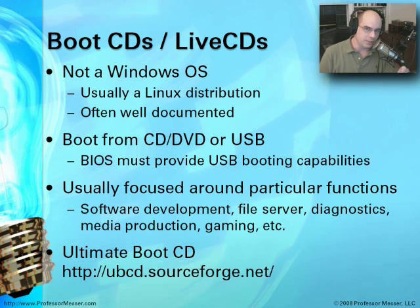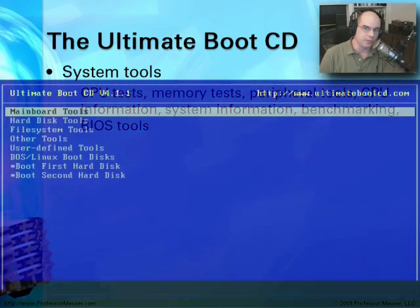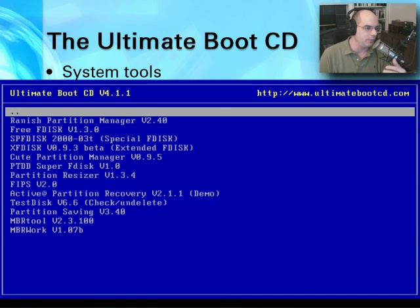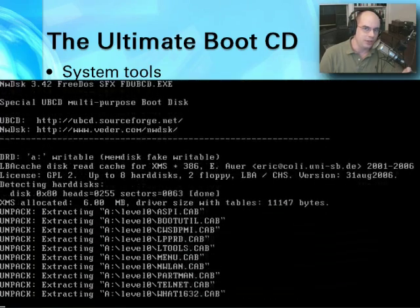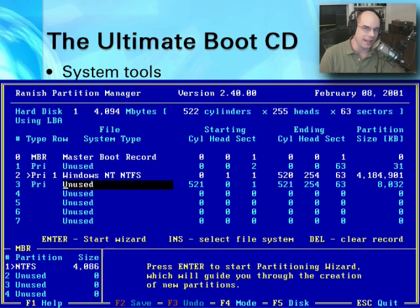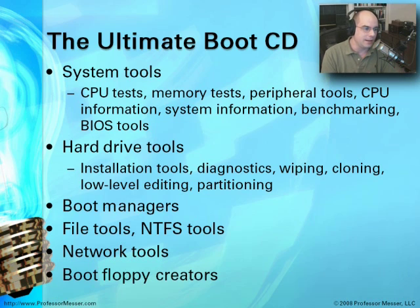A great example is the Ultimate Boot CD, available at ubcd.sourceforge.net. It has an amazing amount of functionality — system tools, diagnostic tests for memory and CPU, benchmarking capabilities, and hard drive tools. You can erase or repartition a hard drive, do low-level editing useful for crash recovery, and work with both FAT and NTFS drives. There are boot managers and network capabilities, and you can even create boot floppies from utilities on the disc. If you need these capabilities, go download the Ultimate Boot CD — you'll be glad you did.